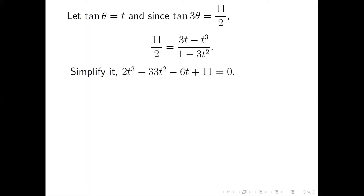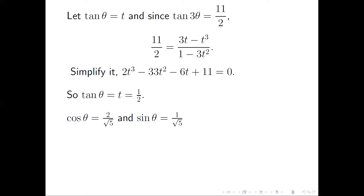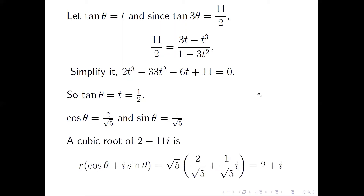Cleaning up, we have a third-order polynomial in t. One of the roots is t = 1/2, so tan θ = 1/2. From this we derive cos θ = 2/√5 and sin θ = 1/√5. There is also a scenario where both cosine and sine are negative, but we try the positive case first — and since it works, we are done. The cubic root of 2 + 11i is r(cos θ + i sin θ) = √5 · (2/√5 + i/√5) = 2 + i.